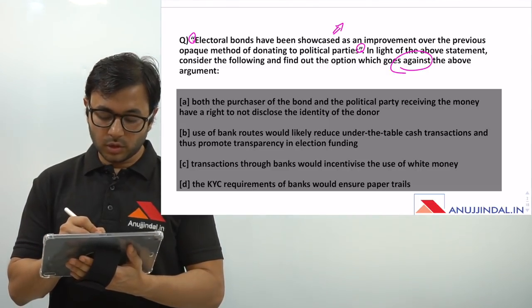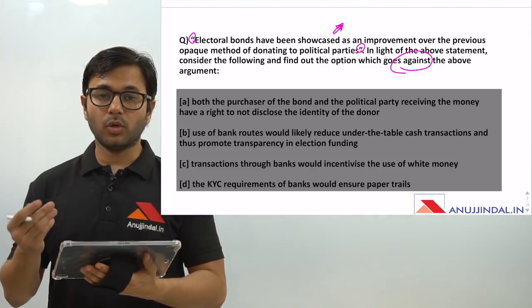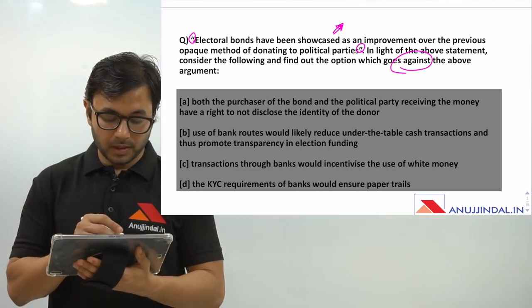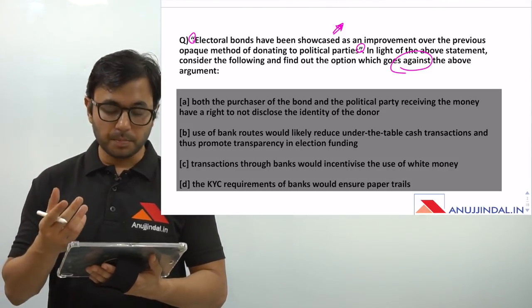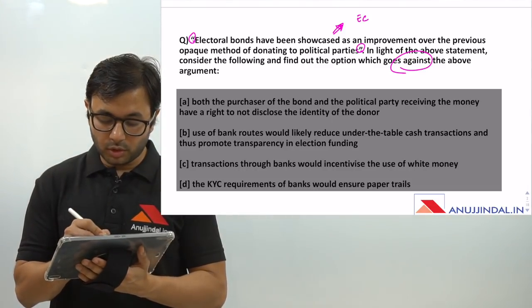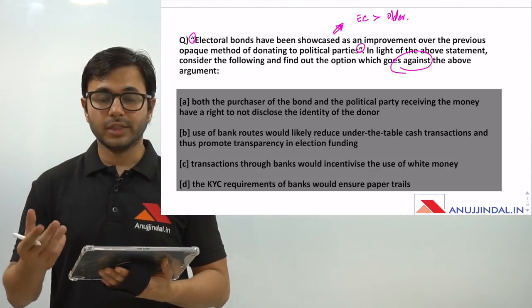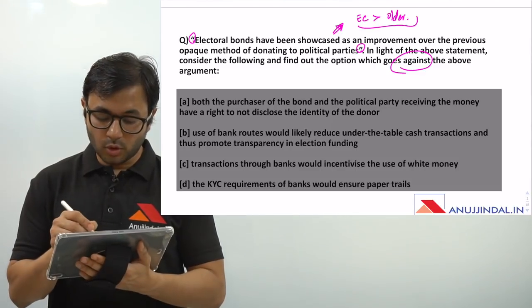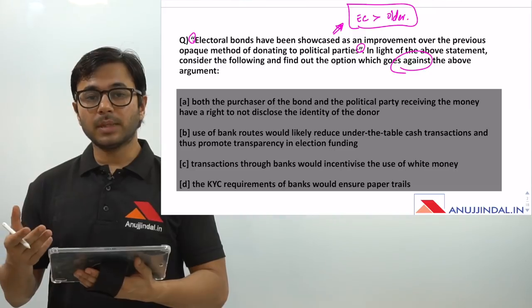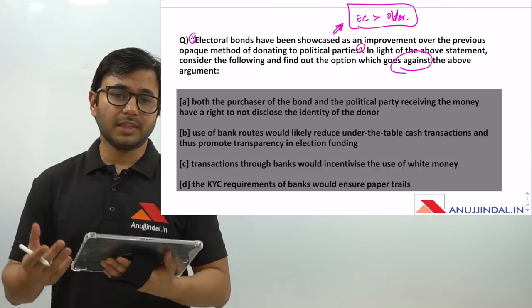We need to break down what the above argument is trying to say, and then only can we find out which point among the four options goes against it. The argument is that electoral bonds are an improvement — they are better than the older method of donating to political parties. So which statement says that electoral bonds are not better, or even worse, or at the same level as the older method?